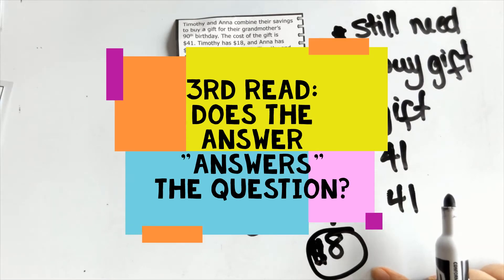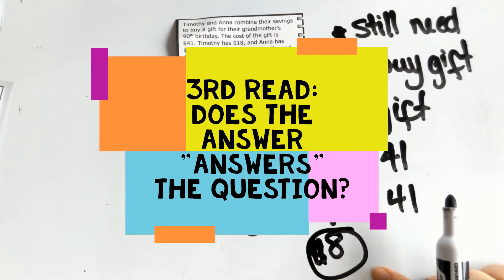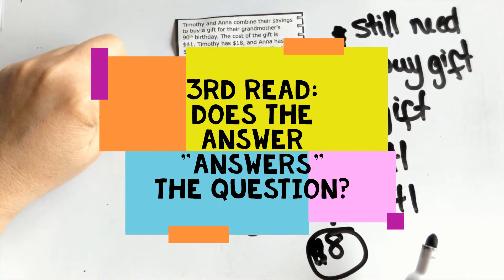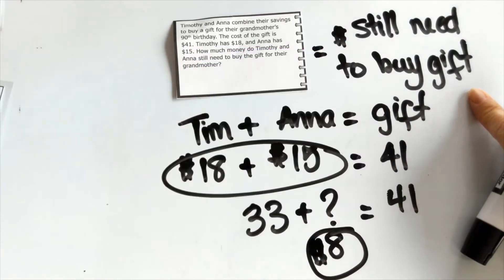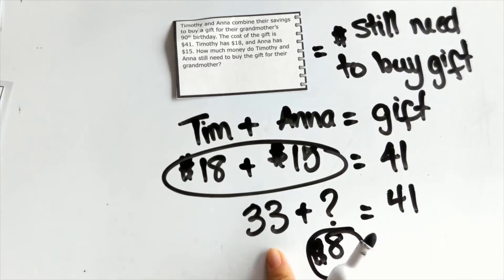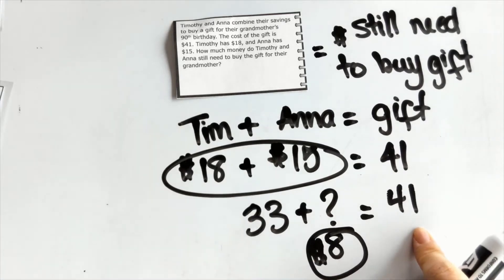After solving, the last question I ask is: does this number answer the question? The question asks how much money do they still need to buy the gift, and the answer is they still need $8. Does that make sense? Is it reasonable? Yes, because they already have $33, so all they need is another $8 to buy that gift worth $41.